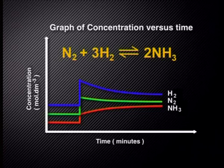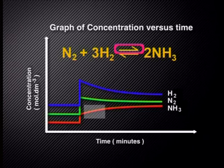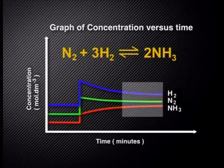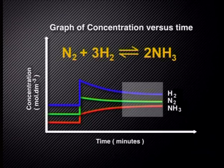Now let's see how a change in temperature and pressure will be shown graphically. An increase in pressure favors the forward reaction, meaning the concentration of ammonia will increase. At the same time, the concentrations of hydrogen and nitrogen will decrease until a new equilibrium is established. In a graph of concentration or moles versus time, we do not get a spike of reactants or products when we change the pressure or temperature.